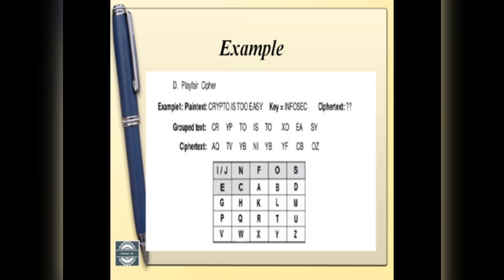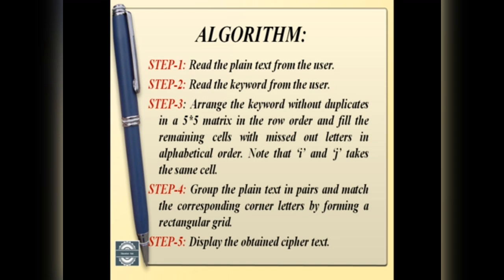The plain text in two letter order is CR, YP, and so on. C and R are in two different rows and different columns. So C will be replaced by the letter just beside it, which is A, and R is replaced by Q. So we get AQ. Now take YP. Y and P are also in separate positions, so just following the rectangle rule, we get QX.